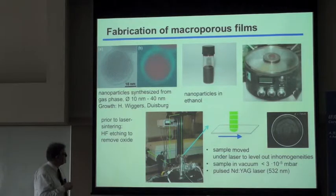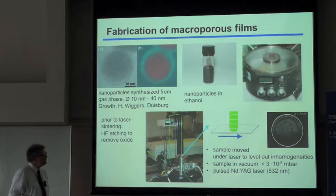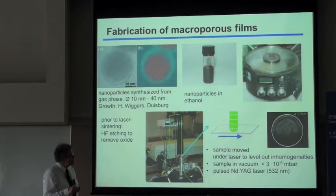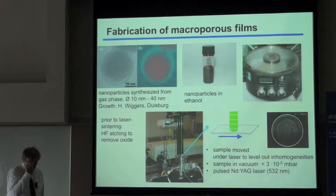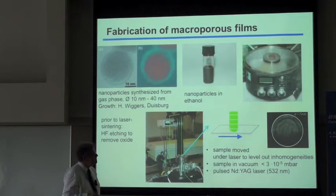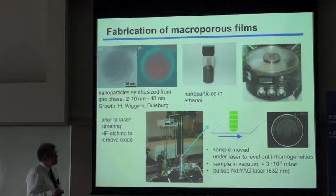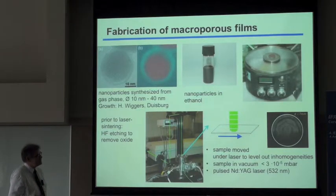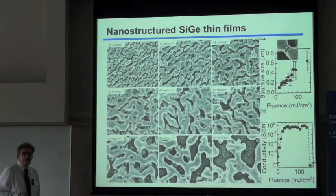We then have to remove the oxide shell, as it hinders most applications, by exposing the thin film to an atmosphere containing hydrofluoric acid. We then take this film into our laser lab, position it inside a vacuum system, and use a pulsed neodymium laser. We bring the laser beam onto the sample inside the vacuum. The laser is very coherent, producing interference fringes, so we move the sample underneath the laser pulses to homogenize the treatment.